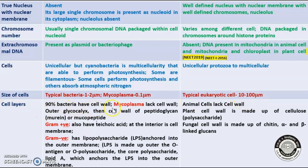90% of bacteria have a cell wall; mycoplasma are bacteria which lack a cell wall. In bacteria, the outer layer is glycocalyx, then cell wall of peptidoglycan or mucopeptide. Gram-positive bacteria also have teichoic acid; gram-negative have lipopolysaccharide. Gram-negative bacteria are considered more pathogenic. Because of teichoic acid and high concentration of peptidoglycan, gram-positive bacteria are able to take up the gram stain, as discussed in the prokaryotic cell class.